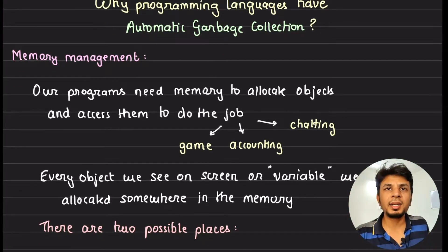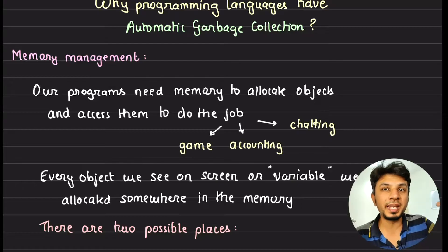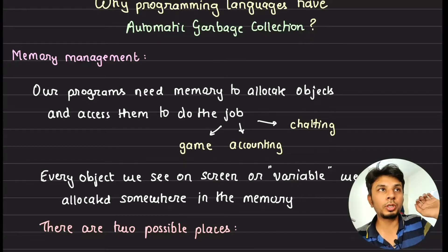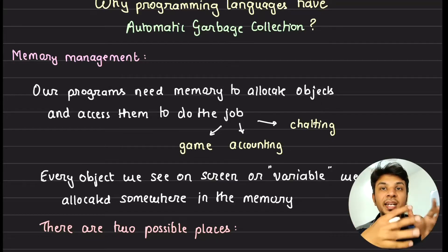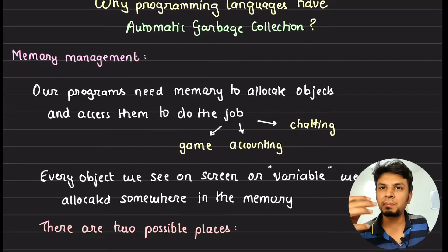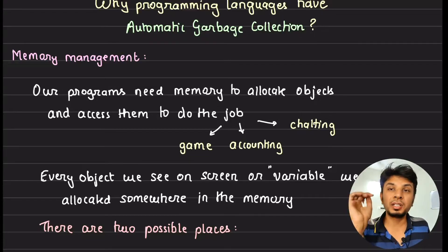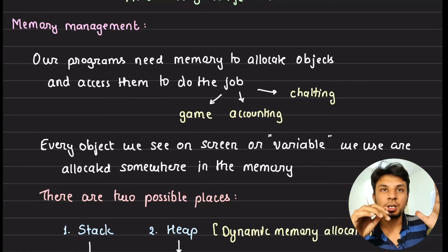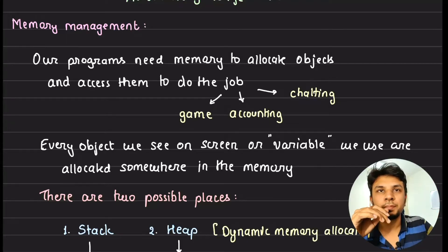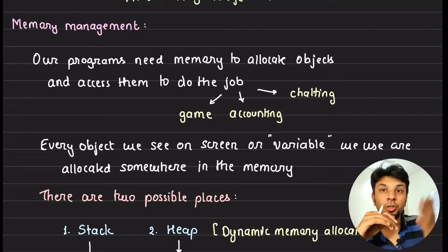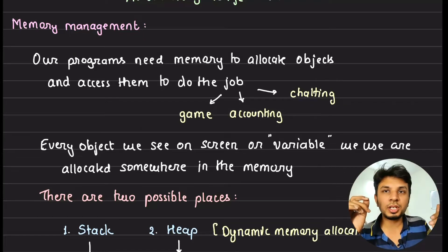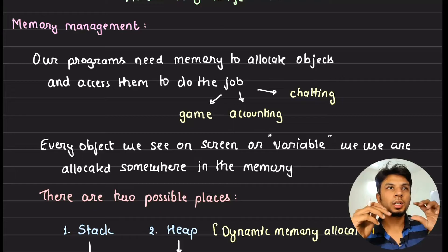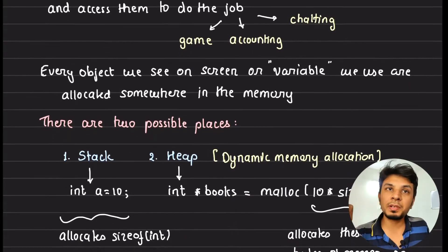Any and every program that you write needs memory to work. When you declare a variable like 'int a = 10', that variable needs its space so you can store and modify values — doing things like summation, multiplication, updating a struct. Every program that runs requires some memory. The job could be building a game, doing accounting, or a chat app — all the objects you see on screen are allocated somewhere in memory.